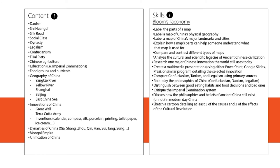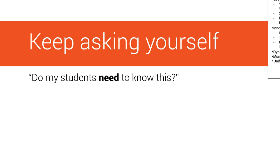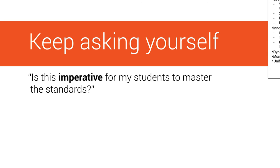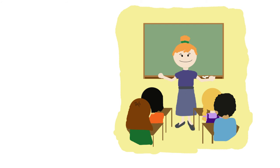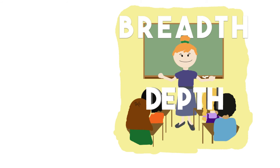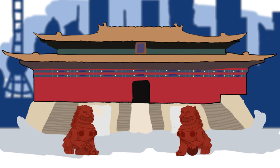Making sure to self-edit is critical. Keep asking yourself: do my students need to know this? Will this help my students respond to the essential question in a more informed manner? Is this imperative for my students to master the standards? Is it better for my students to know a lot about ancient China, or is it better to get more specific? You know your students and content best. When looking at content and skills, you want to strike a balance between the two.